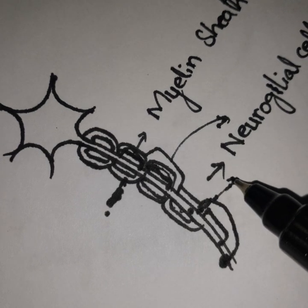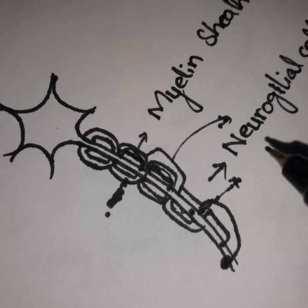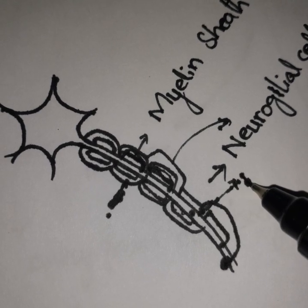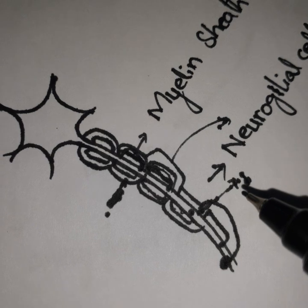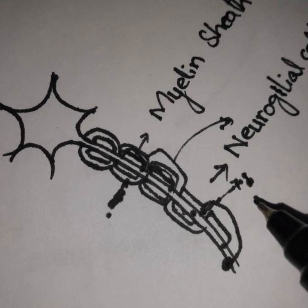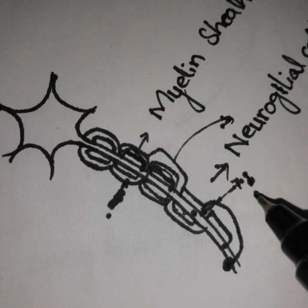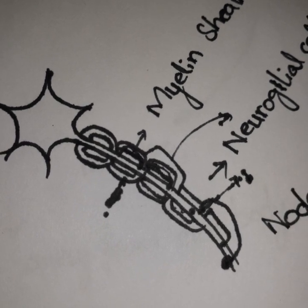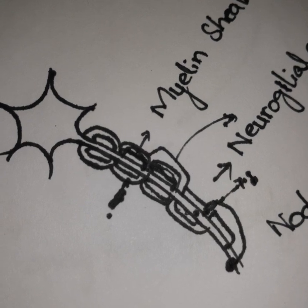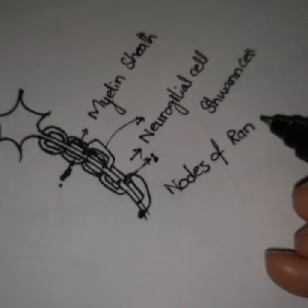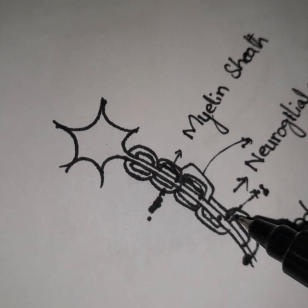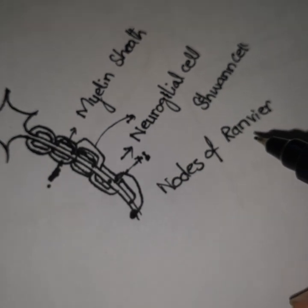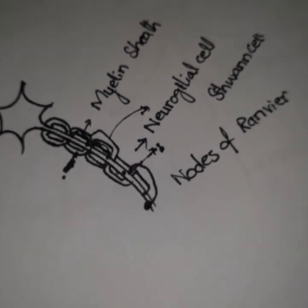There are areas where the myelin sheath is not present. We call this the non-myelinated area, and we also call it the nodes of Ranvier. This part, where no myelin sheath is present, is the node of Ranvier.